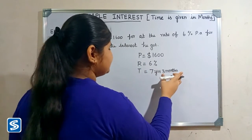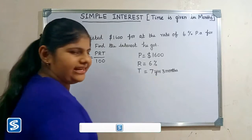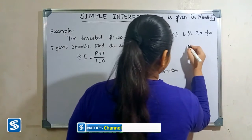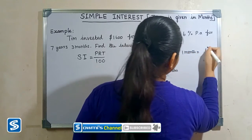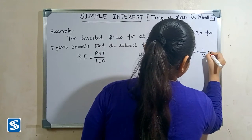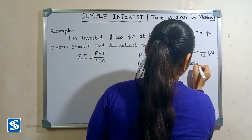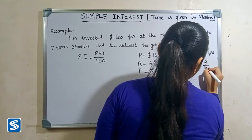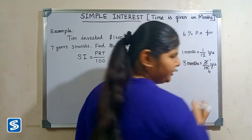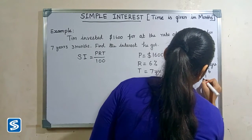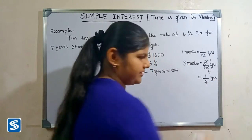You can see here there are 3 months, so now we have to convert it into years. We already know that 1 month is equal to 1 by 12 years, so 3 months is equal to 3 by 12 years. Since 3 ones are 3 and 3 fours are 12, this simplifies to 1 by 4 years. So 3 months is equal to 1 by 4 years.